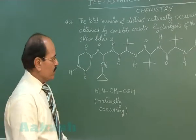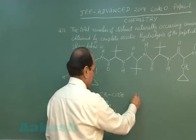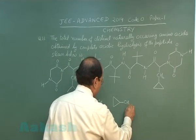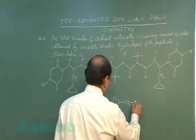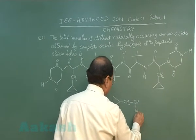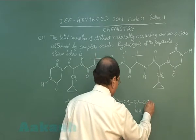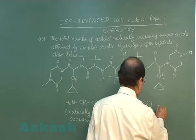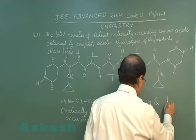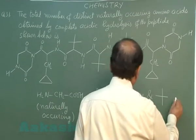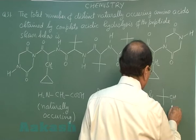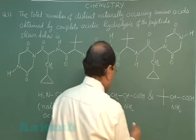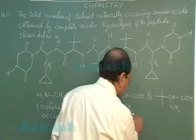The other 2 amino acids obtained by hydrolysis are this one and another, but these 2 are not naturally occurring.